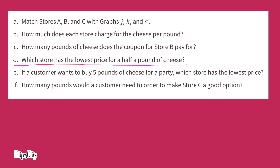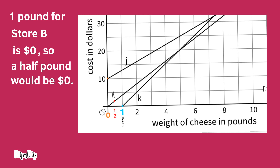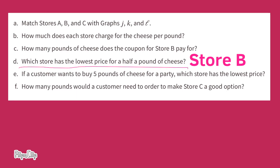Which store has the lowest price for a half pound of cheese? Looking at line K, with a five dollar coupon one pound of cheese would cost zero dollars. So a half pound at Store B would also cost zero dollars. Store B has the lowest price for a half pound of cheese.